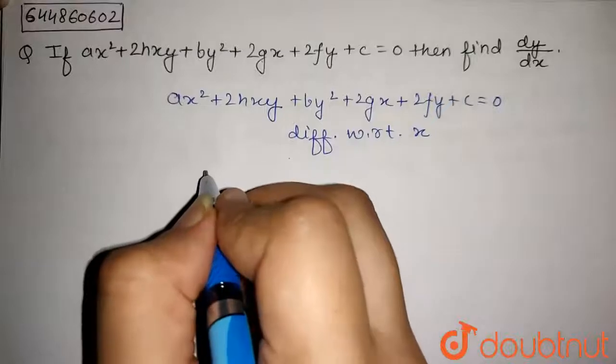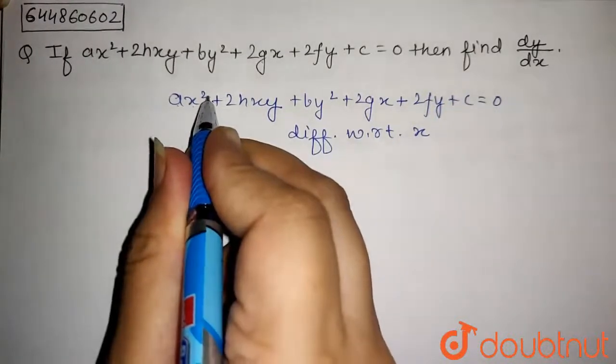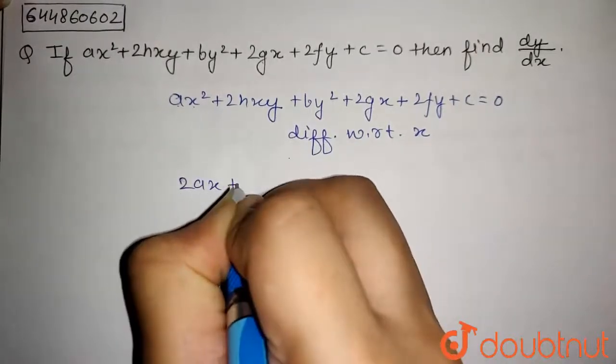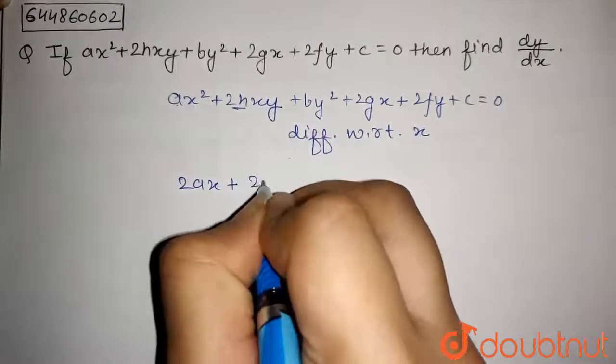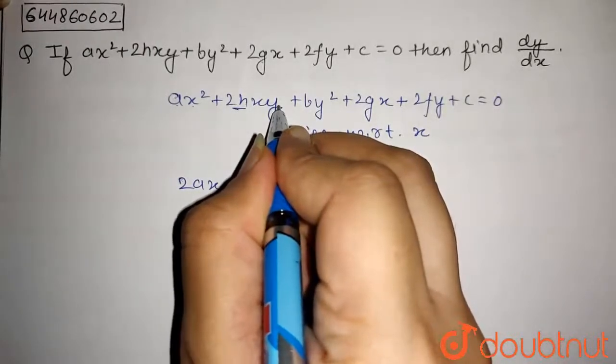This will be differentiation of ax² will be, a is constant and x² will be 2x. So this will be 2ax plus 2h is constant. Now, x and y are in multiplication, so by product rule